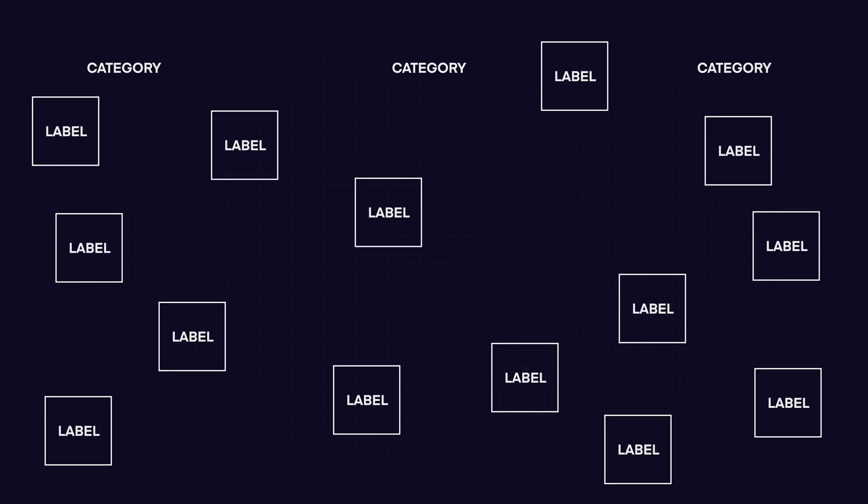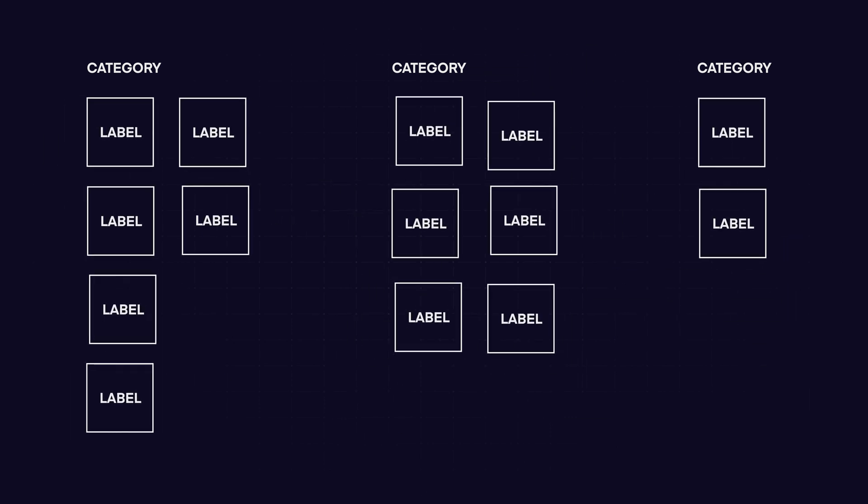Closed card sorting is when you have predefined categories and hand over a bunch of cards to your participants asking them to put each card in the category they think it belongs to. This is usually a very good follow-up to your open test, and it's also great if you're testing a current information architecture or adding new elements to an existing one.